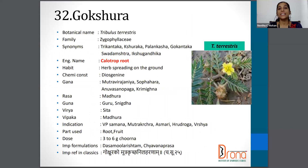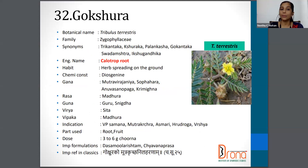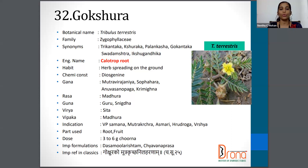The next one is Gokshura, with the botanical name Tribulus terrestris. Family is Zygophyllaceae. Synonyms are Trikantaka, Shuraga, Gokantaka, Shvadamstra, etc. The English name is Caltrops. The part used is the root and the fruit, and the dosage is 3 to 6 grams of Churna.